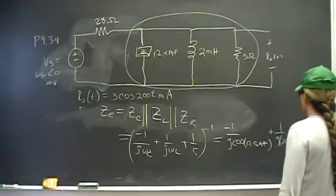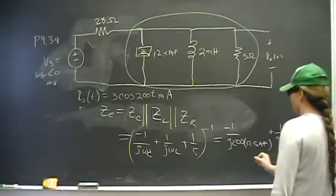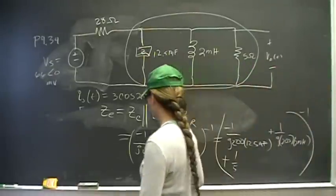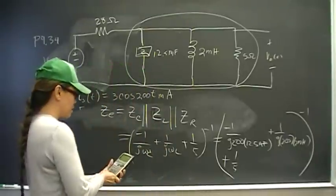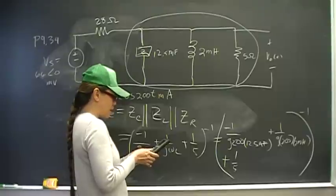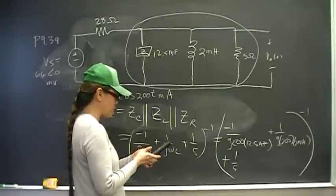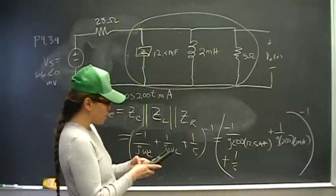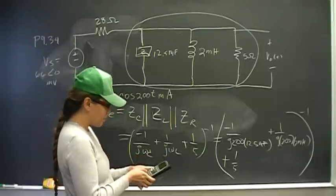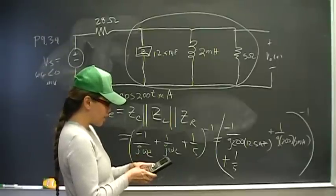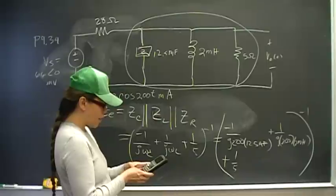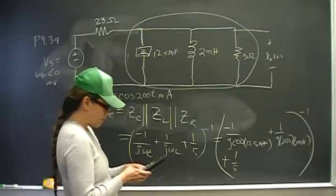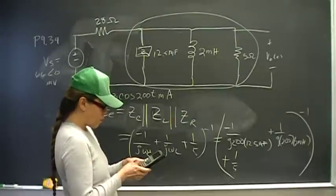Okay, so here I go. 1 divided by... In the TI-89 you don't have a j, of course—in no calculators do they use j for a convention—but in circuits we use j. So on your TI-89 you put i, the imaginary symbol for i, times 200 times 12.5 times 10 raised to the negative 3, plus 1 over j, which is i...